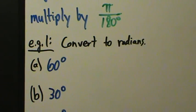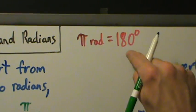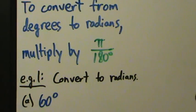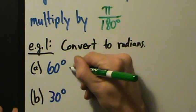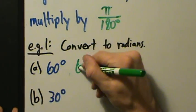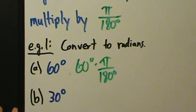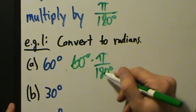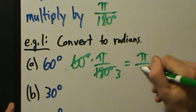If we want to convert 60 degrees to radians, we take 60 degrees and multiply it by pi over 180, because pi radians equals 180 degrees — we're really just doing a dimensional analysis type thing. So 60 degrees times pi over 180 degrees: 60 goes into 180 three times, so this equals pi over 3.